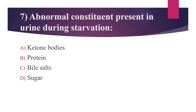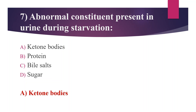Seventh question: abnormal constituent present in urine during starvation. Option A: ketone bodies. Option B: protein. Option C: bile salt. Option D: sugar. The answer is Option A, ketone bodies. Ketone bodies are acetone, acetoacetate, and beta-hydroxybutyrate. Rothera's test is used for detecting ketone bodies, especially acetone and acetoacetate. Gerhardt's test detects acetone. Hart's test is used for detection of beta-hydroxybutyrate.